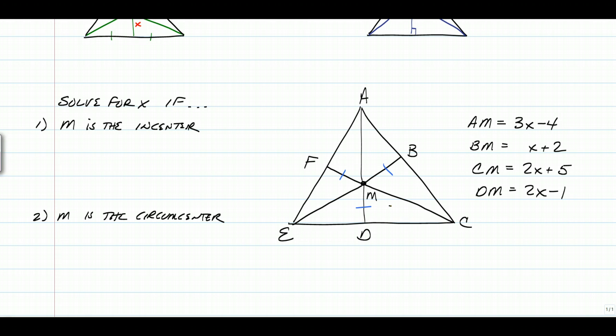What we need to do is we need to find BM and DM, and we're going to set those equal to each other because they are distances from that incenter to the sides. So all we have to do is set X plus 2 equal to 2X minus 1, and we will end up with X is equal to 3.